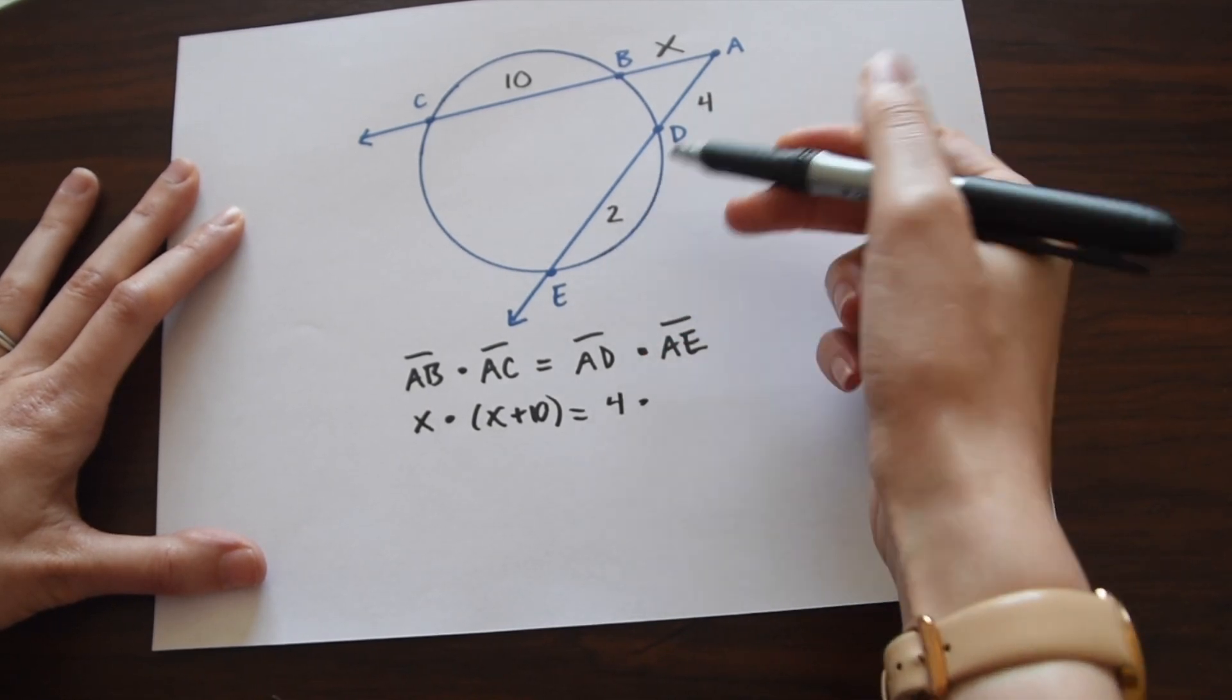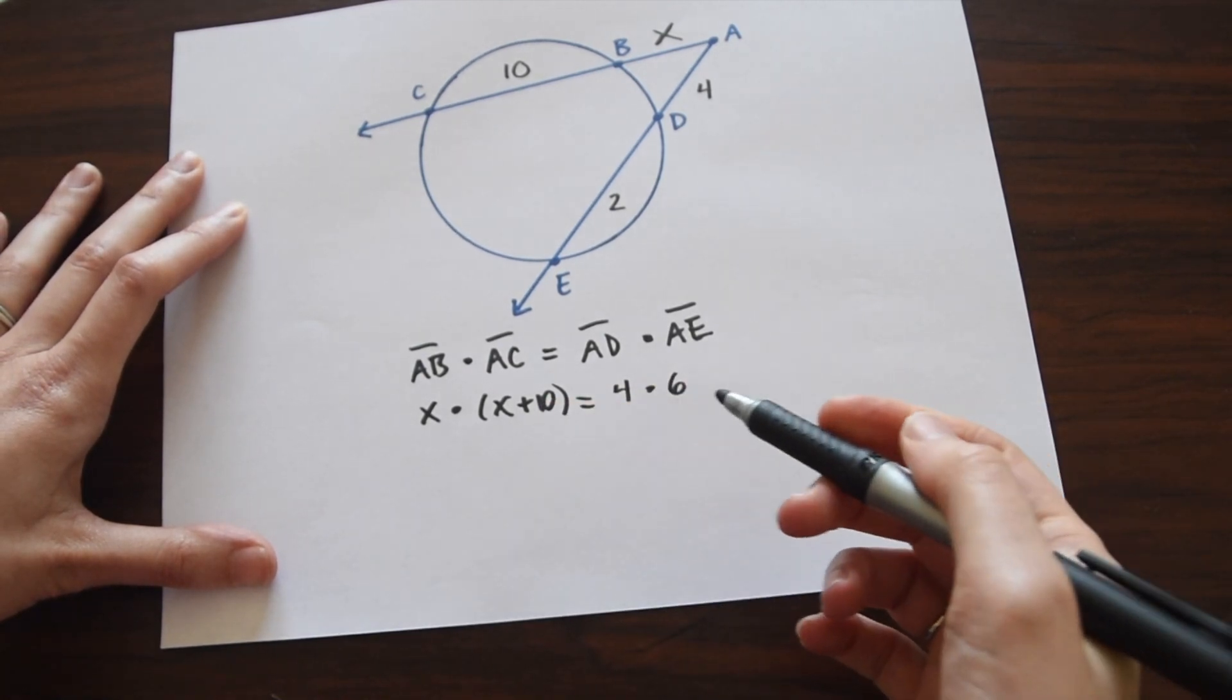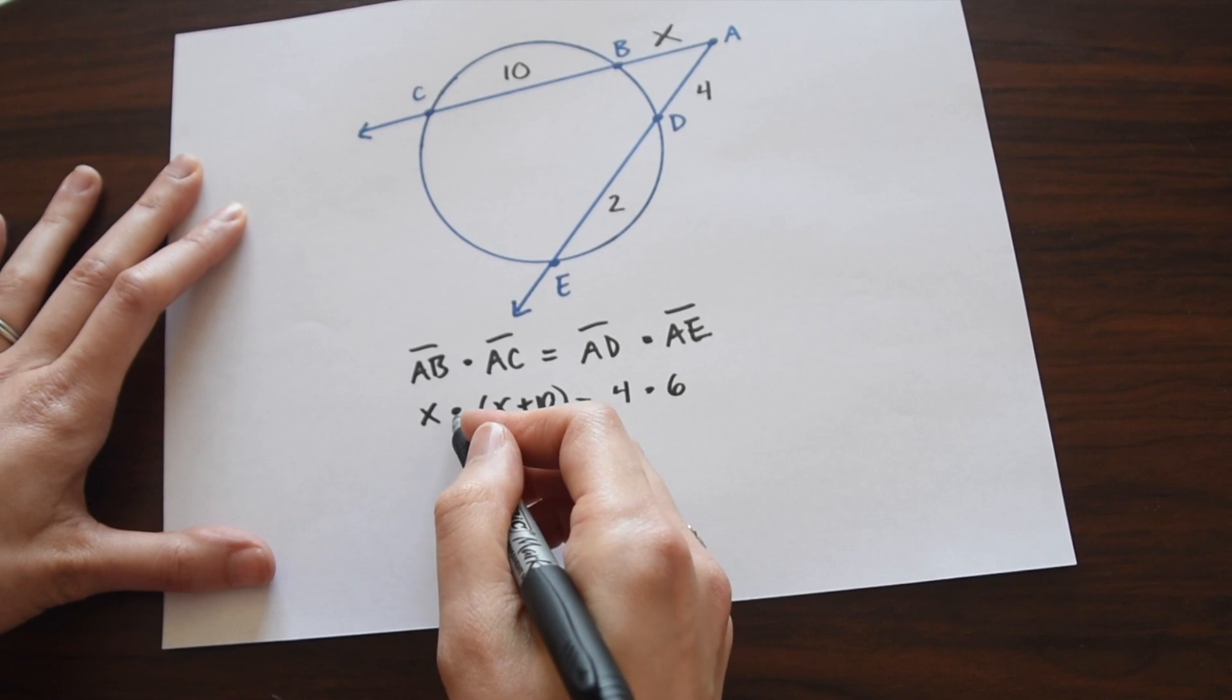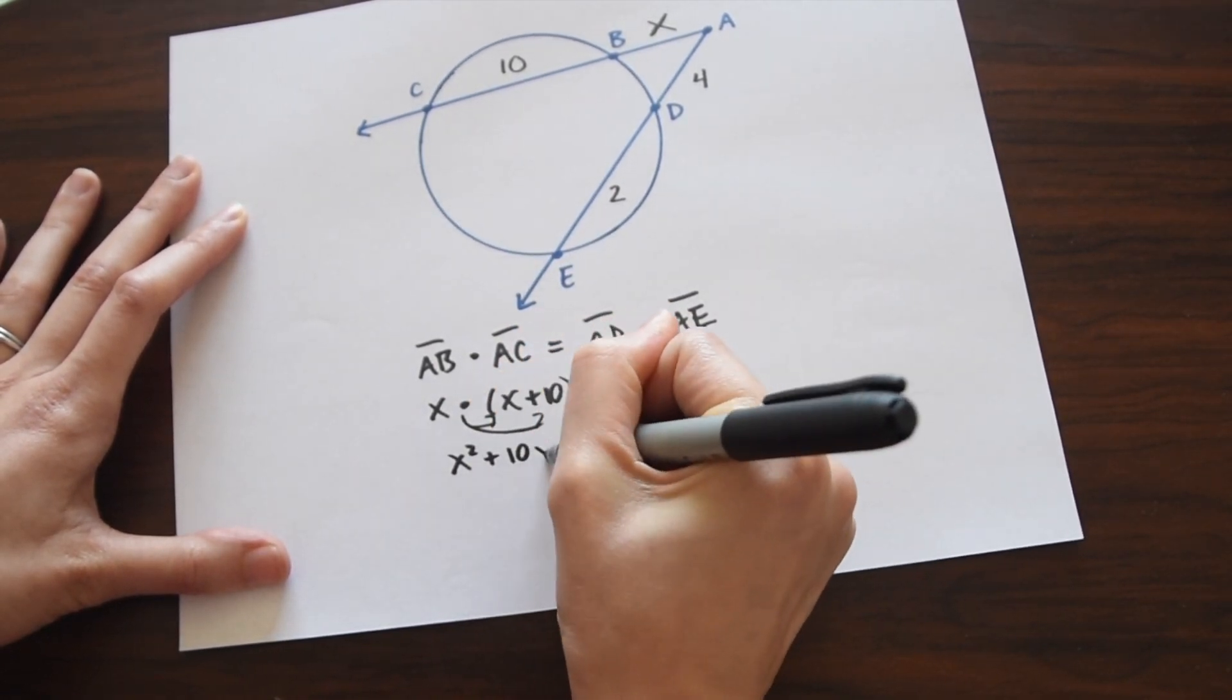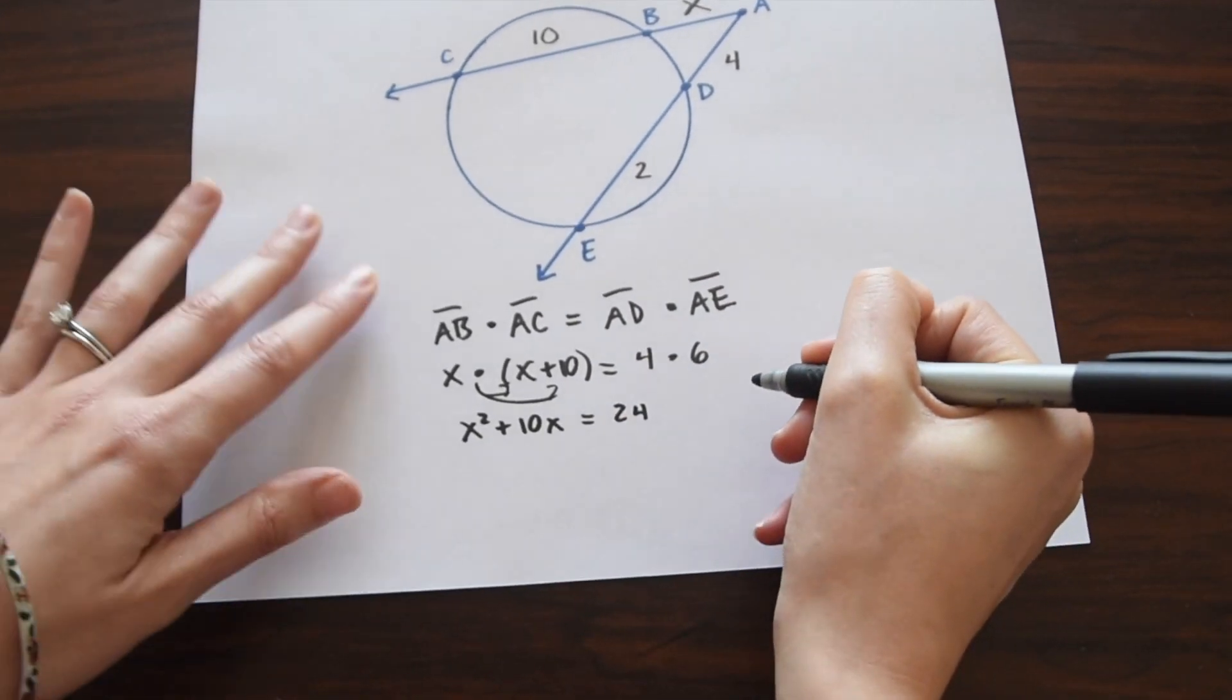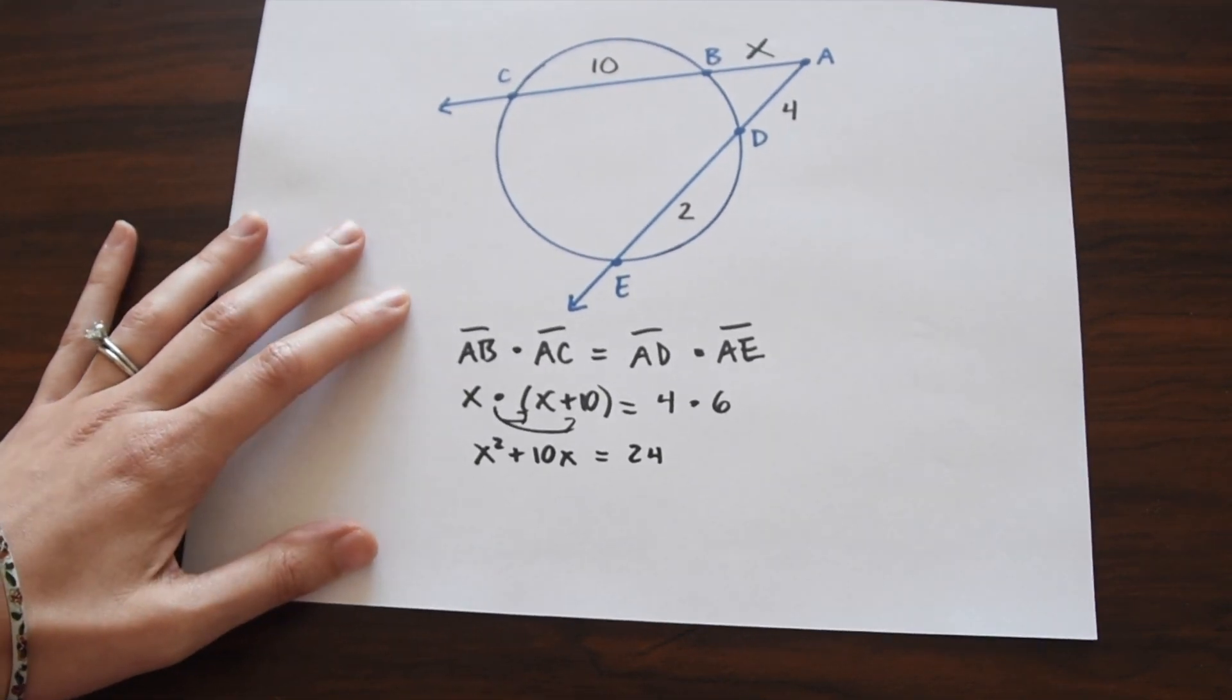So now I just want to multiply everything, so we can distribute this X. So this gives us X squared plus 10X. 4 times 6 is just going to be 24.